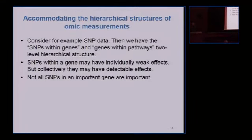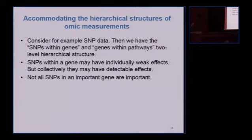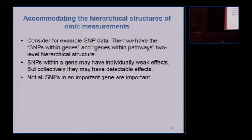Another line of work is trying to accommodate hierarchical structures among OMIC measurements. For SNP data, we naturally have a two-level structure: multiple SNPs belonging to the same gene, and multiple genes belonging to the same pathway. Some studies have looked at clusters of pathways called super pathways. You can think of it as a tree structure — from SNPs up to genes, pathways, and super pathways.